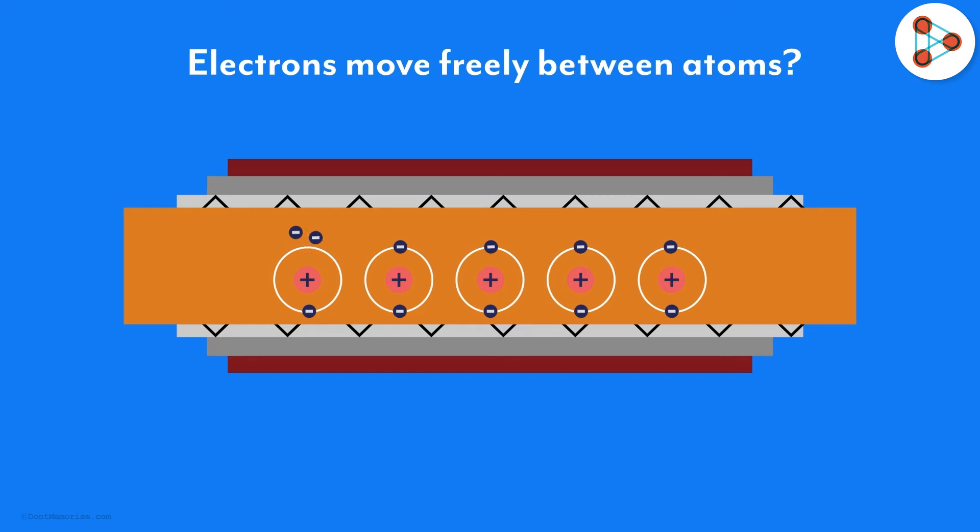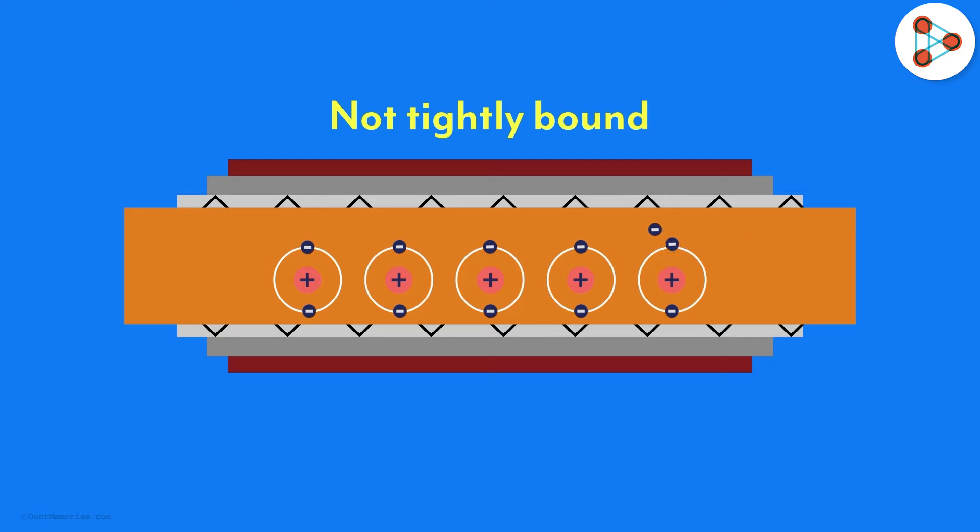Some materials allow electrons to flow more easily or freely among their atoms, while some do not. When do you think electrons will move easily between atoms? That's right, when they are not too tightly bound to their own atoms. Such elements which have very mobile electrons are called conductors. So when we want to make electric wires, we use good conductors of electricity as they assist in electron flow.